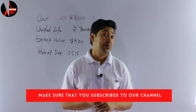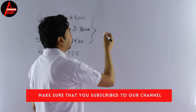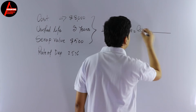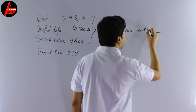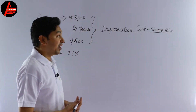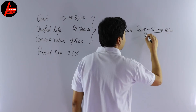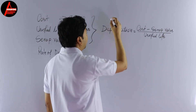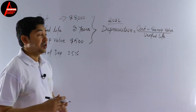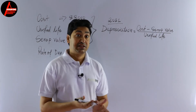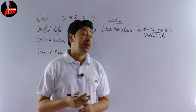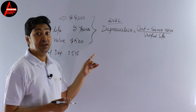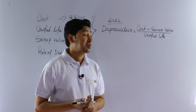So now we need to know the formula for the straight-line method of depreciation. Depreciation equals the cost of the asset minus the scrap value, divided by the useful life. In our example, the accounting period starts on 1st January 2021 and ends on 31st December 2021, so the depreciation is recorded on 31st December 2021.